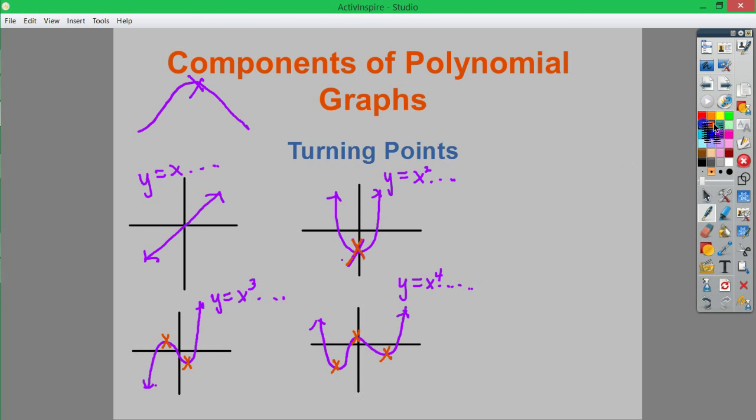Now, you may notice that there's some relationship here between the degree of the polynomial, so whatever the exponent is on the biggest number, and the number of turning points. When I have one here, I don't have any. When I have two, I've got one. When my degree is three, I have two. When my degree is four, I have three. And there is some relationship there.